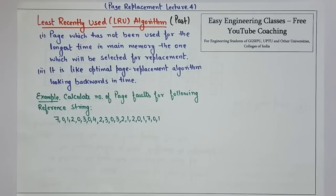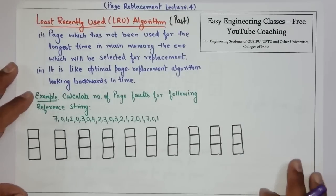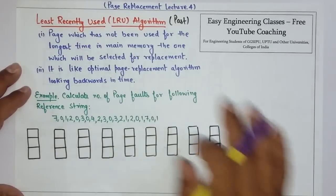It is like the optimal page replacement algorithm looking backwards in time. In this case, we can see the optimal page. Let's solve a question. How do we do this? So now let's start with the question and we are assuming number of frames to be 3. So now let's start with the solution of this question using 3 frames and LRU technique.